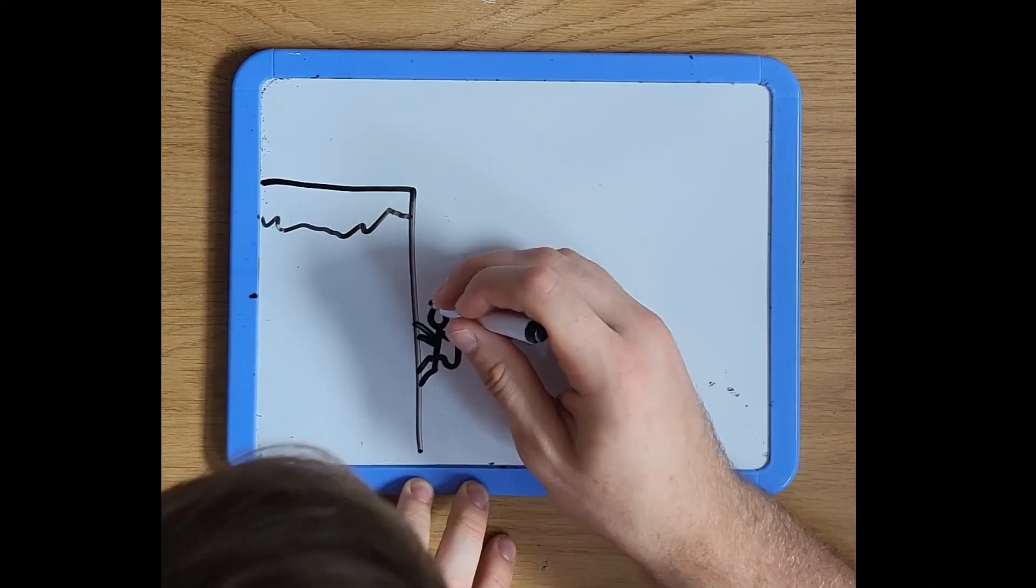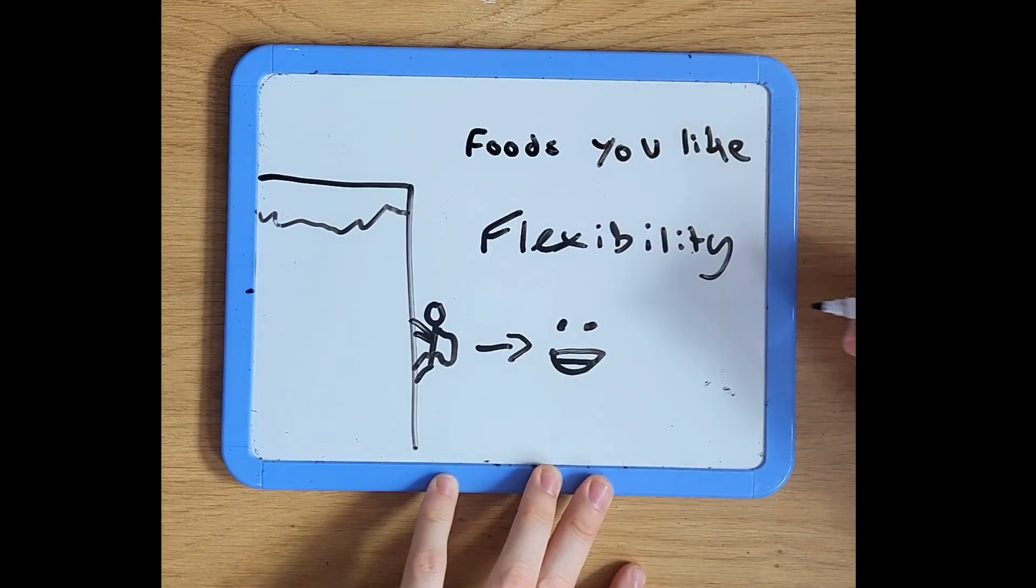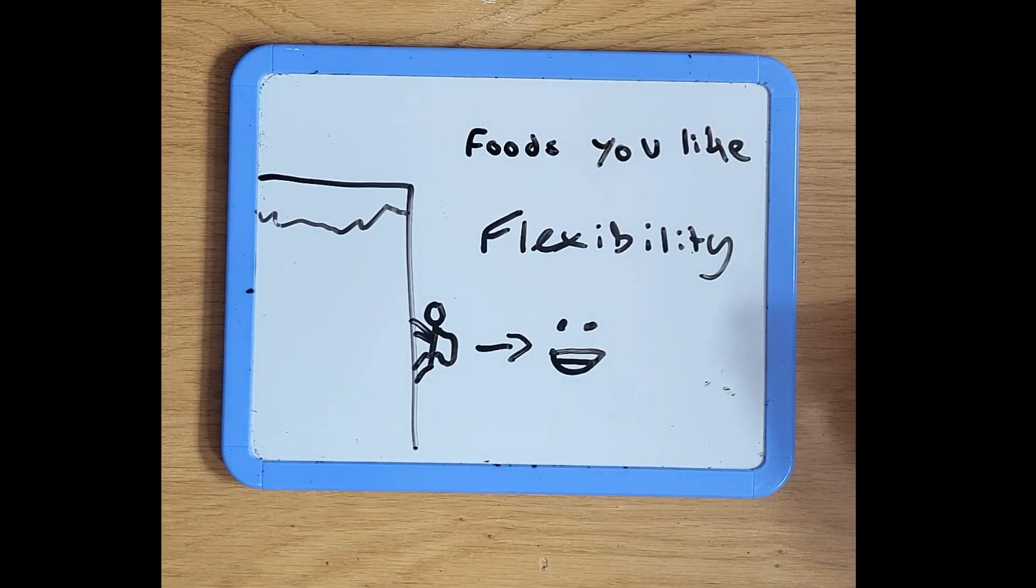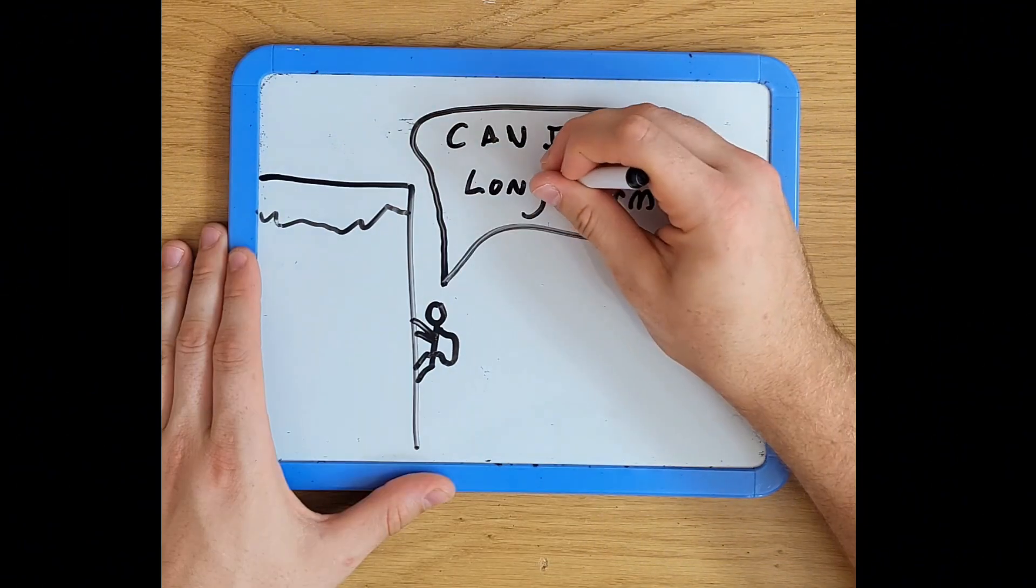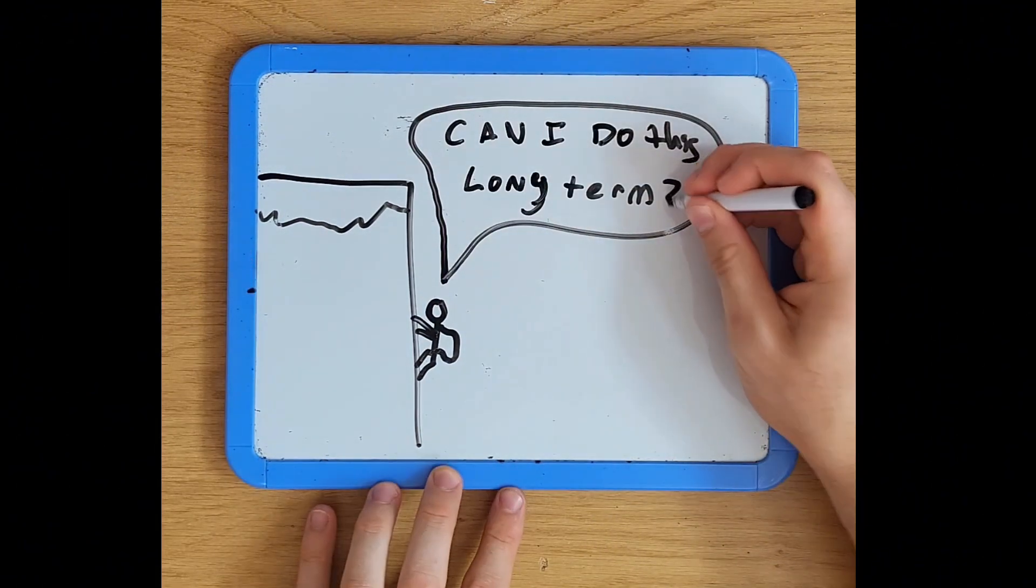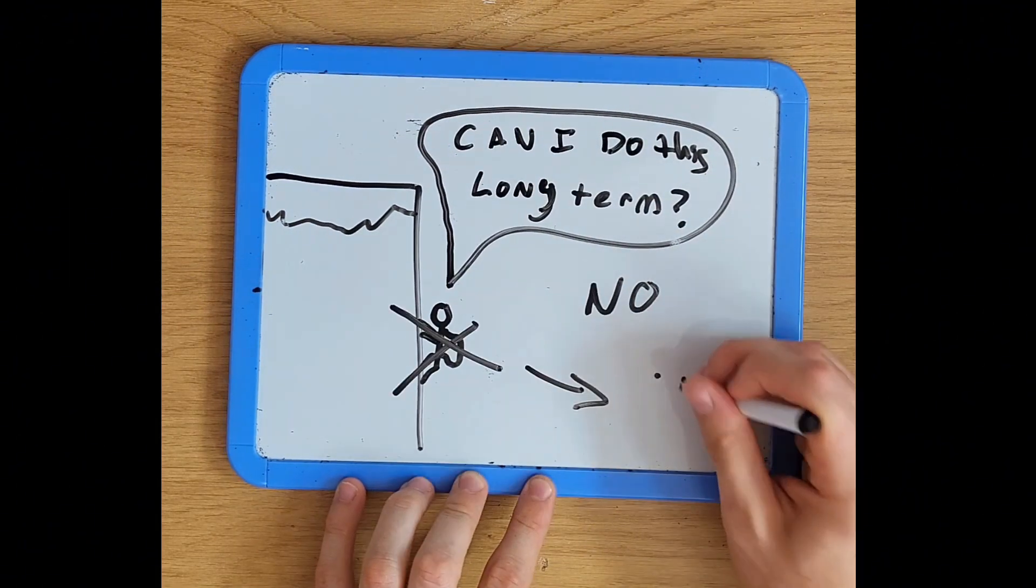But if your plan includes foods that you like, movement you enjoy, and a little flexibility, that's the plan that wins every time. Sustainability beats intensity. So ask yourself, can I still be doing this in a year from now? And if the answer is no, change it.